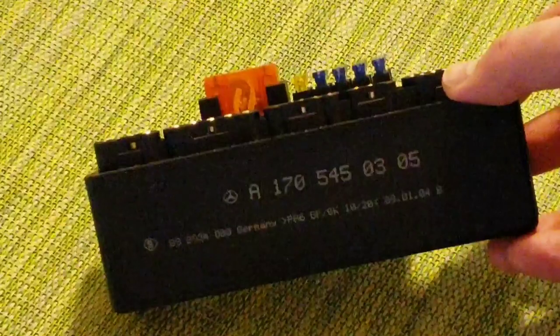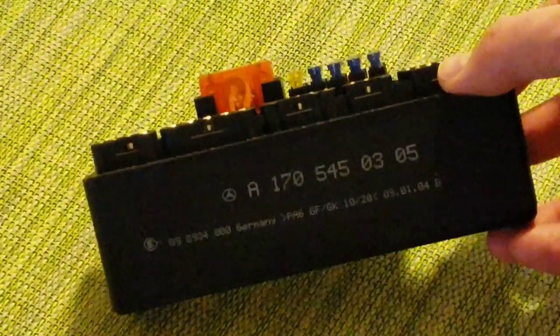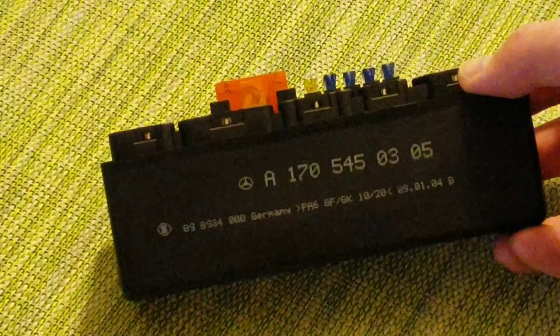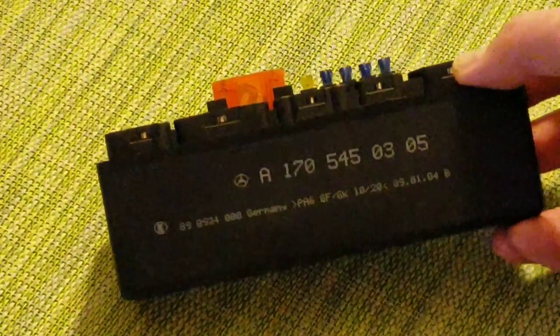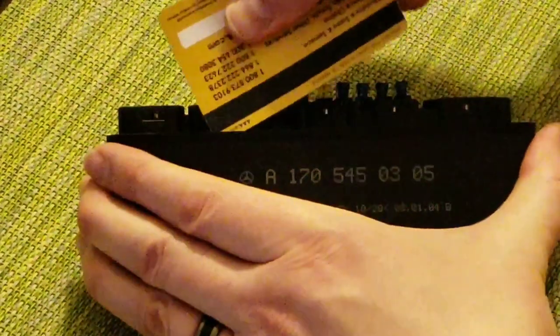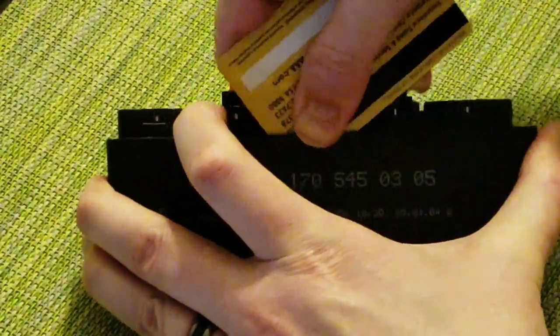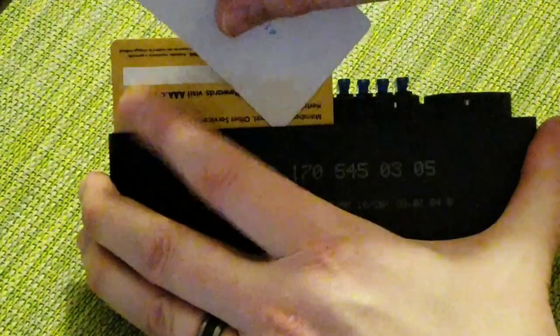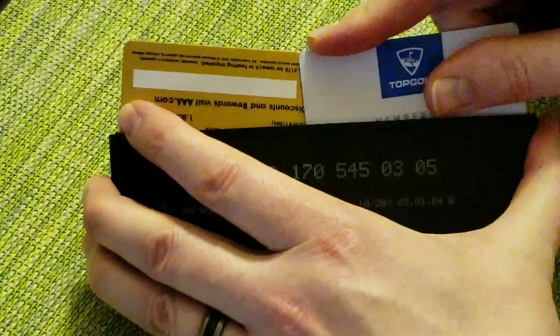Take a quick notice here of the part number in case you're needing to get a new one or used one on eBay. It's a 1705450305. As my shop teacher once said, use the right tool for the job. I have here a Triple A card, Top Golf membership card, and Movie Magic card.